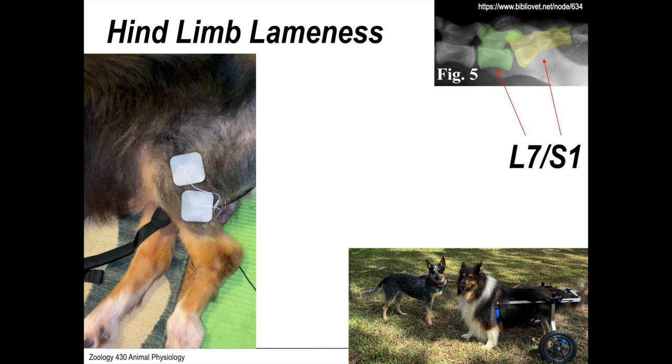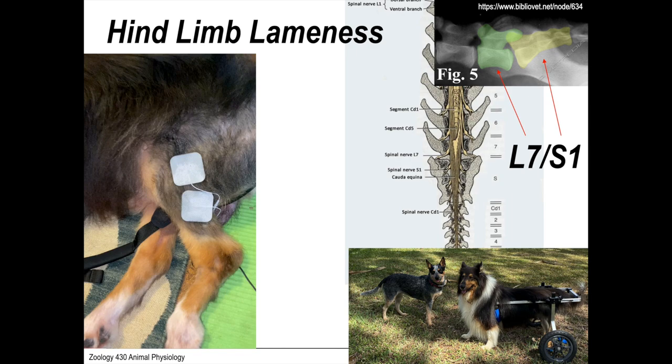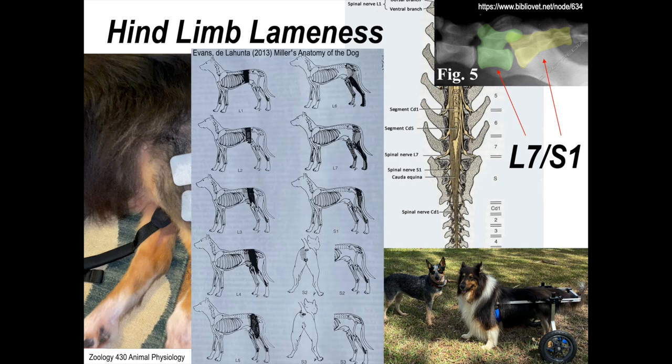It turns out that spinal nerves L4 through L6 innervate the thigh. But L7 and S1, you can see here, here's the field for L1, L2, L3, L4.